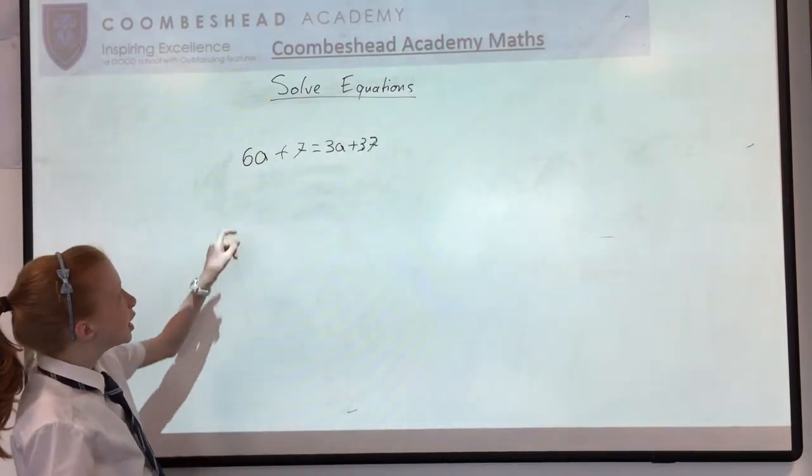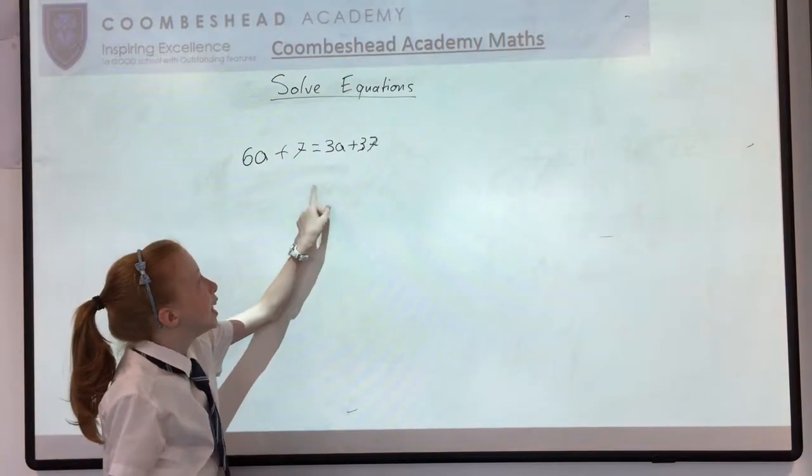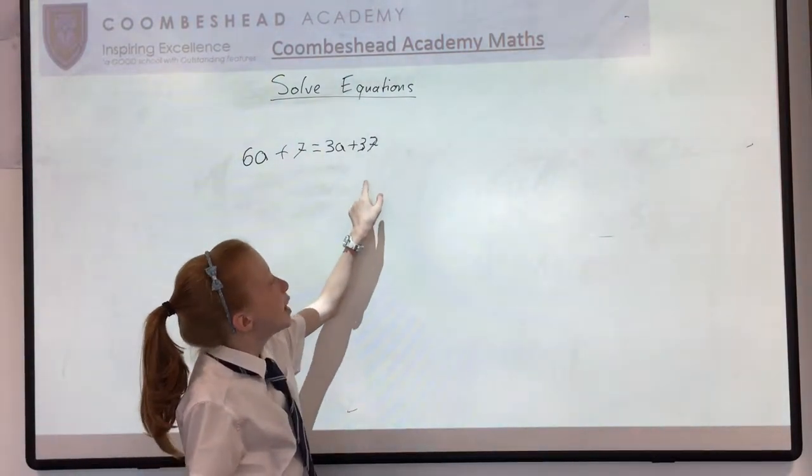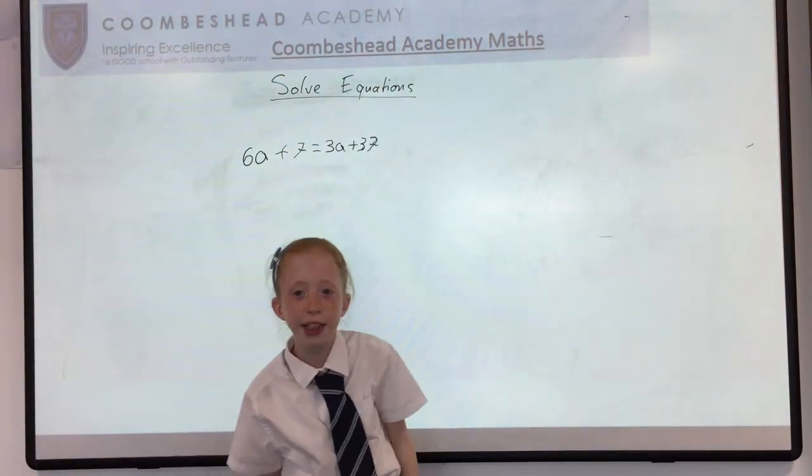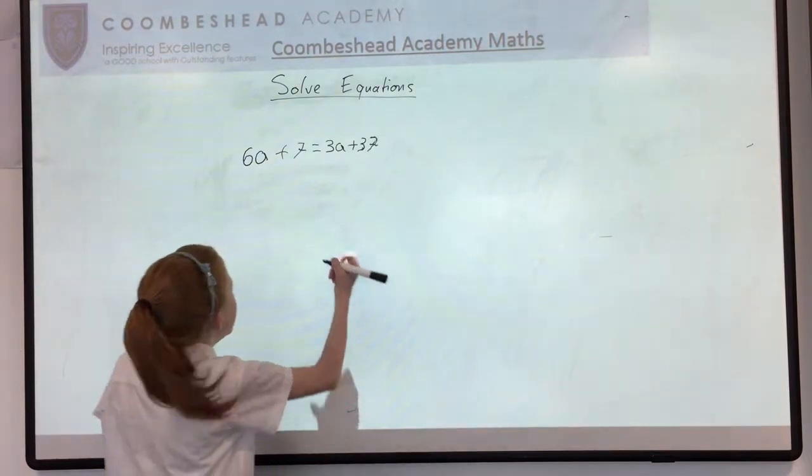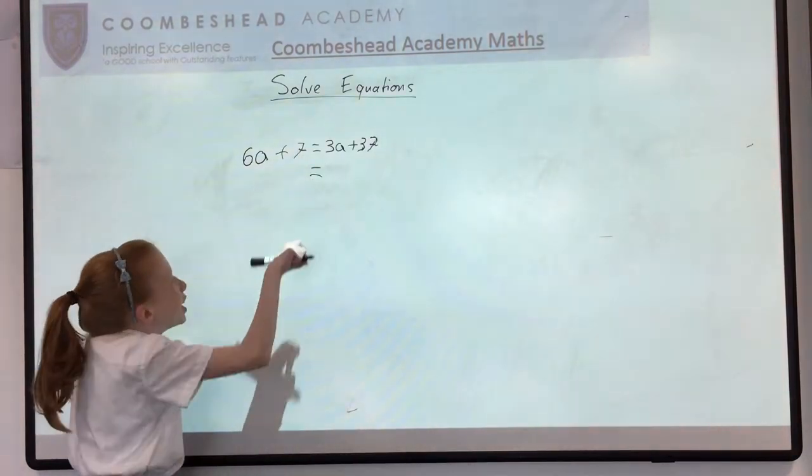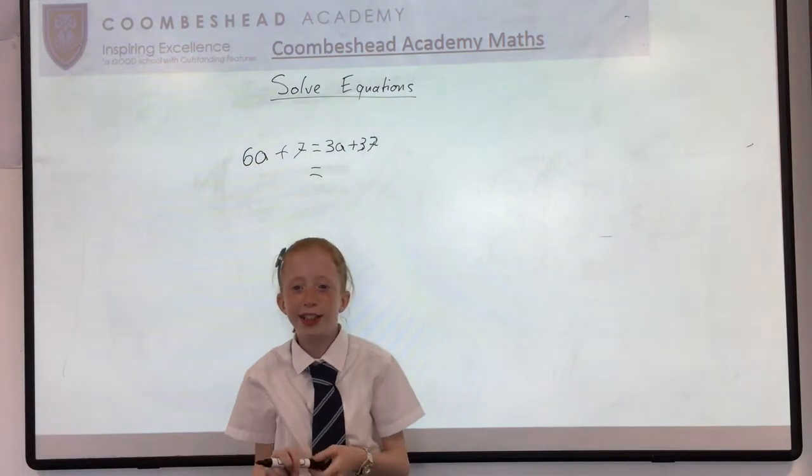So the sum we have is 6a plus 7 equals 3a plus 37. So the first thing we do after that is put the equals sign in line with the others. That makes it a lot easier.